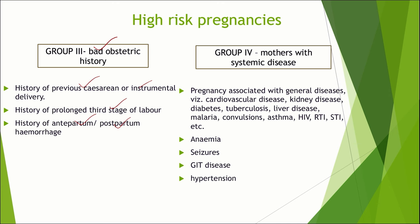Group 4 high-risk pregnancies include mothers with systemic disease, where pregnancies are associated with cardiovascular disease, kidney disease, diabetes, tuberculosis, liver disease, malaria, epilepsy, asthma, HIV, and other general diseases complicating pregnancy. Anemia, seizures, thyroid disease, and hypertension also come under Group 4. So high-risk approach in pregnancies will be commonly asked, and you need to answer by classifying it into these 4 groups.